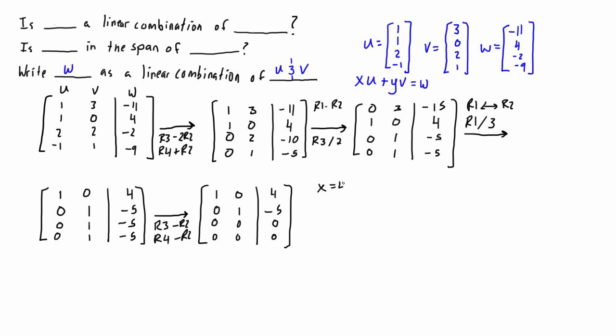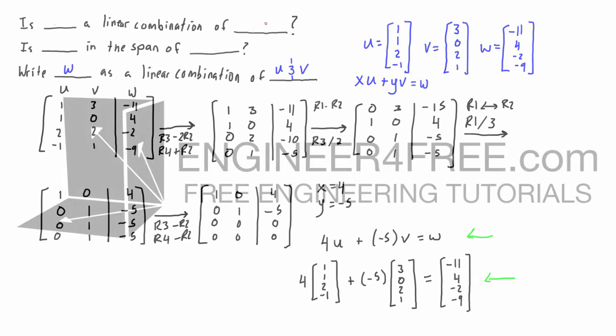The solution is just x equals 4 and y equals negative 5. There's just one way to represent w as a linear combination of u and v, and basically that is if we just plug these in we have 4u plus negative 5v is equal to w. So really this is the answer to the question. This is how you write w as a linear combination of u and v, and then inherently that also means that w is in the span of u and v because there is at least one solution, and if it's in the span then that means w is a linear combination of u and v.